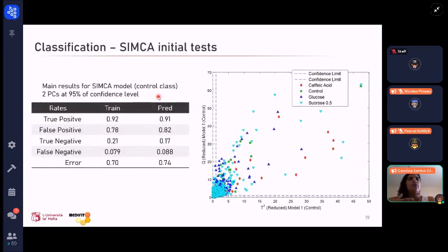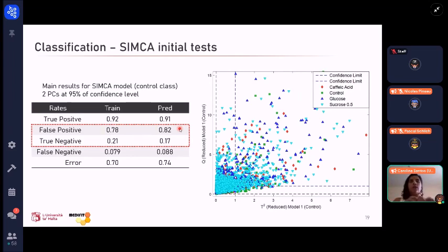When we analyzed the data and did the SIMCA model, we realized that although we had a high true positive rate, we also had a high false positive rate. The shape of our boundaries are wide enough to include all the control samples, but they are also including many non-target samples. This is a problem for authentication because it cannot differentiate control samples from the adulterated ones.